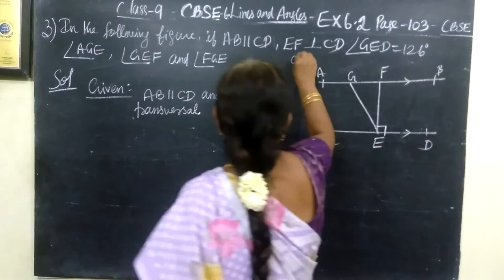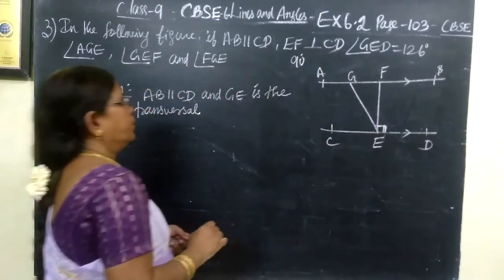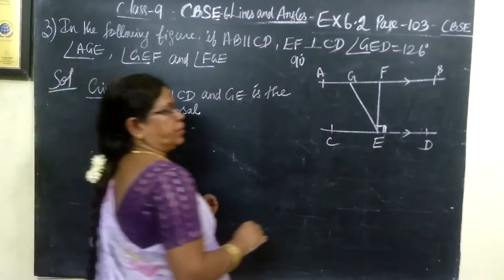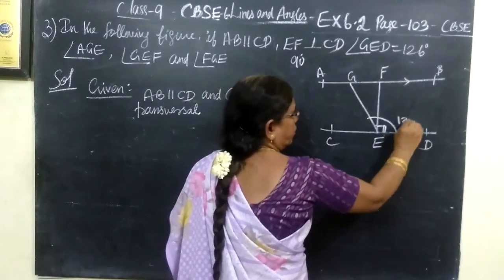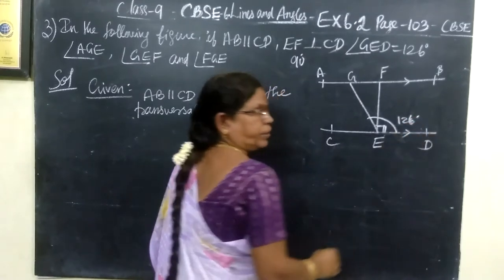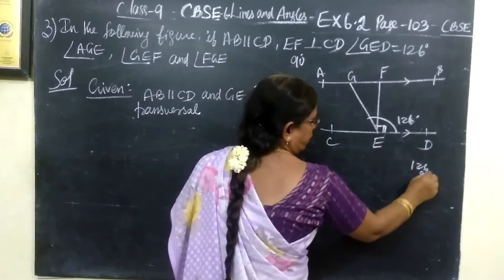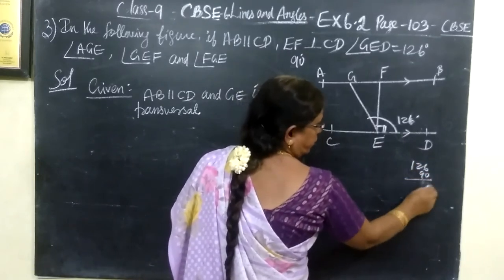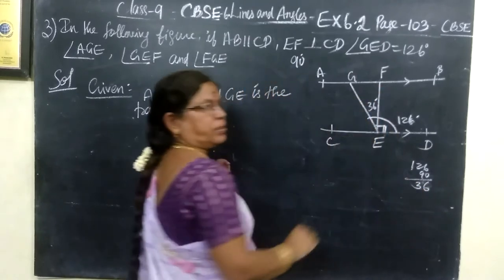EF perpendicular CD means that this angle is 90 degrees and GED is 126 degrees. So it is obvious that 126 minus 90 gives 36 degrees. So this angle is 36 degrees.